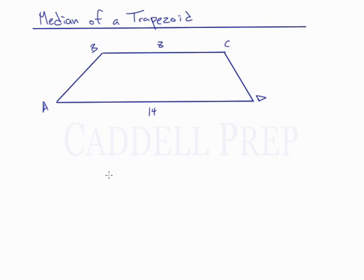Let's go over a median of a trapezoid. So we have this trapezoid here. These are two parallel sides, BC and AD.